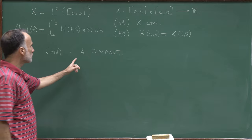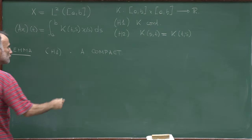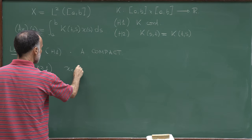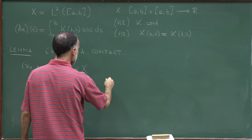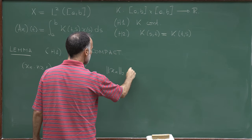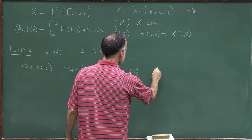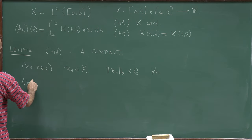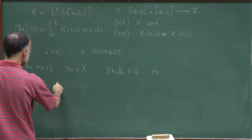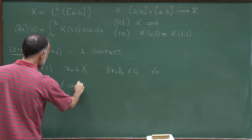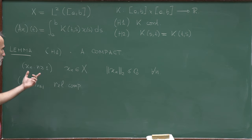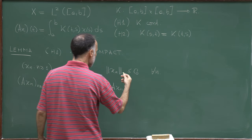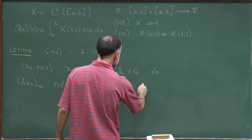This proves that the kernel regularizes functions: it takes functions in L2 and turns them into continuous functions. A similar argument shows A is compact. To prove compactness, we consider a sequence {xₙ} of elements of L2 bounded by a constant c₀ in L2 norm, and we want to show that {Axₙ} is relatively compact — i.e., we can extract a subsequence converging in L2. Let yₙ = Axₙ; we just proved each yₙ is a continuous function.